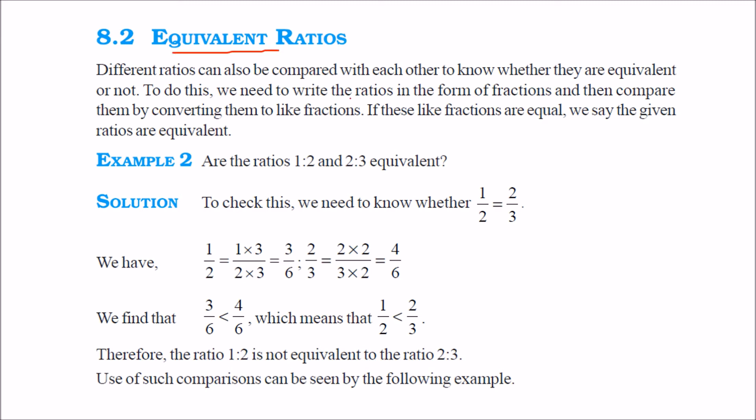So, what are equivalent ratios? Equivalent ratios means when you want to compare two quantities and they are in fractions or in form of ratio. How can you compare? For example, you want to compare half with 2 by 3, means 1 by 2 or 2 by 3. We need to know whether half is equal to 2 by 3, whether half is greater than 2 by 3, or half is less than 2 by 3.